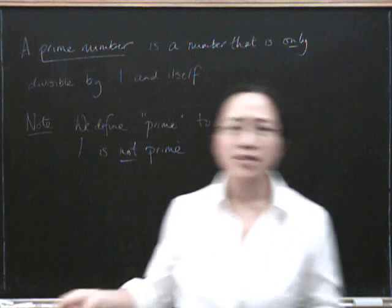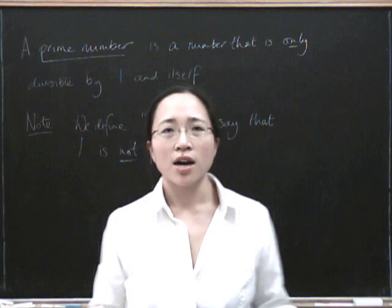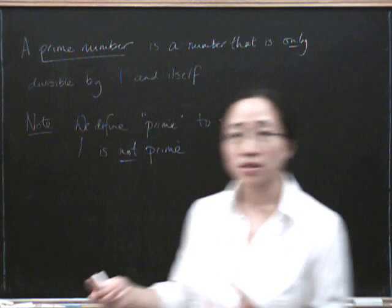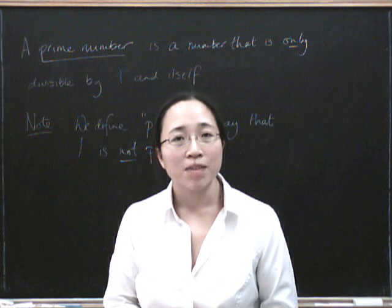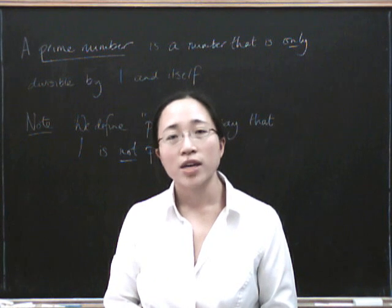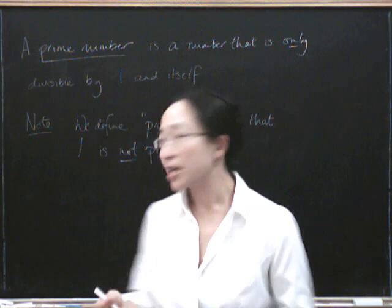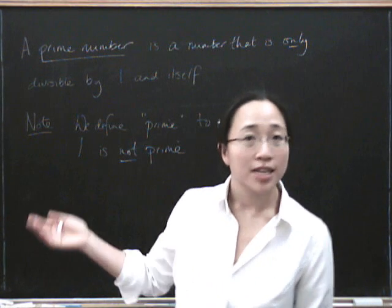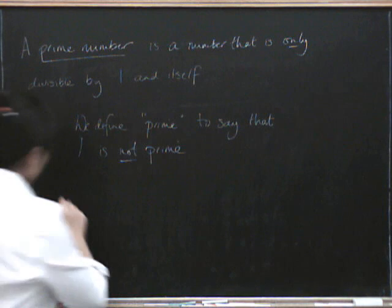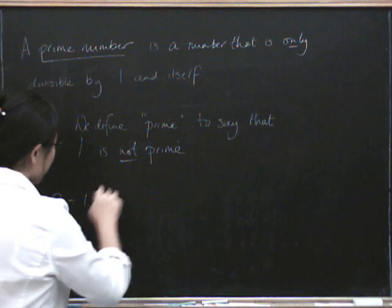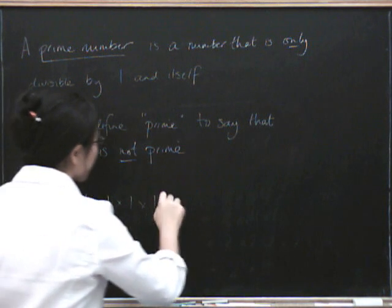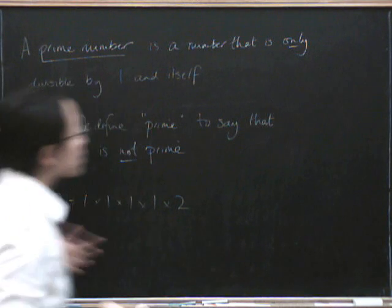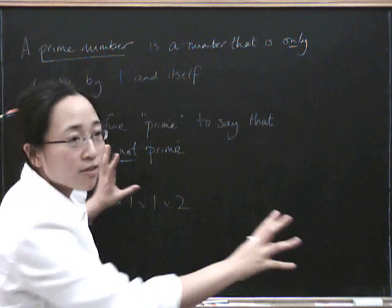There are many reasons that we don't want one to count as being prime. One reason is that it would make the fundamental theorem of arithmetic kind of annoying, because we'd have to say something silly about ones. If we allowed one to be prime, then numbers wouldn't have unique factorisations into prime numbers, because we could always say that 2 is 1 times 1 times 1 times 1 times 2 — and that would just be silly. So we have to get rid of that from our definition.